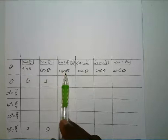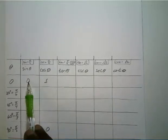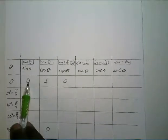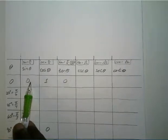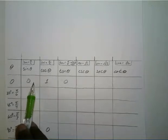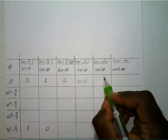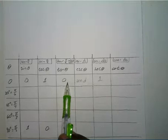Tangent is sine over cosine, so sine of zero over cosine of zero is zero over one, which is just zero. The reciprocal of zero divided by any number is zero, but flipping it gives some number divided by zero — which is undefined. Secant is the cosine flipped, so one over one is still one. Cotangent flips tangent, and any number divided by zero is undefined.